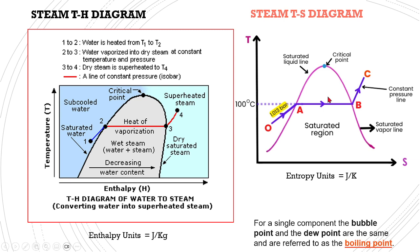This is what we discussed earlier — the TS diagram. Both of these units are joules per kilogram. The temperature against entropy curve has a similar shape, and how that process happens is represented by the curve. For a single component, the bubble point, boiling point, and dew point are the same. At 100 degrees Celsius for water, that is the temperature where evaporation takes place as well as dew or condensation takes place — the bubble point or dew point is the boiling point.